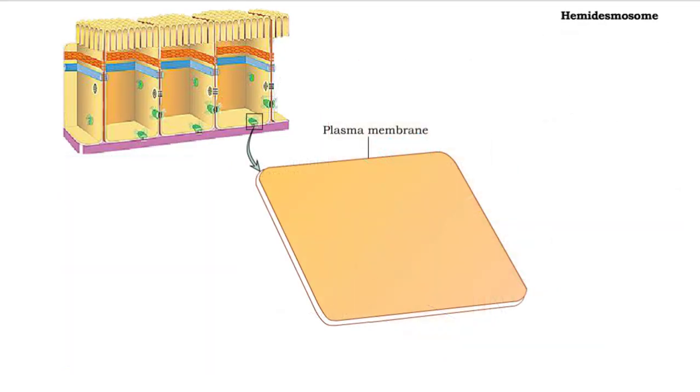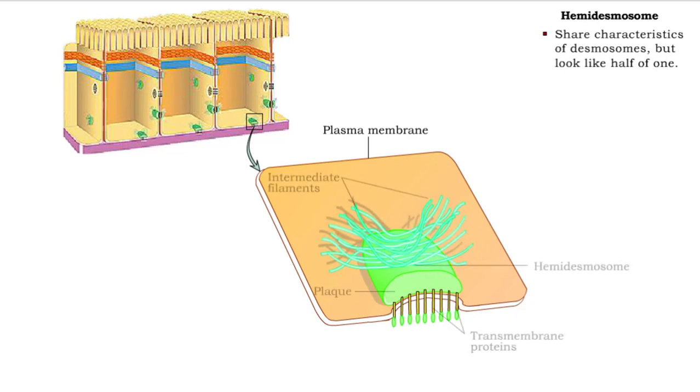The hemidesmosome or half-desmosome provides strong attachments between cells and other extracellular materials, such as the basement membrane of epithelial tissues.